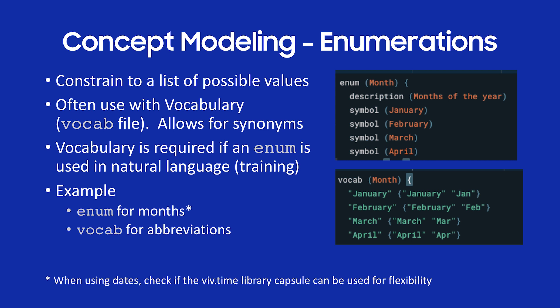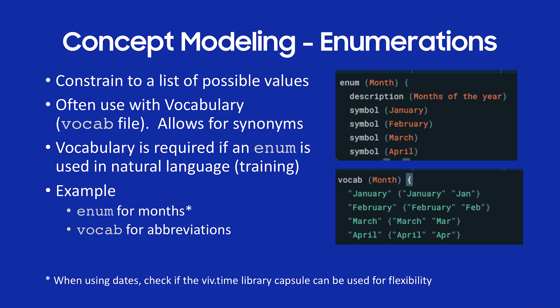Oftentimes when you're using enumerations you also use what we call vocabulary. Vocabulary is how you set up synonyms. So in that code snippet you can see I've set up synonyms: January/Jan, February/Feb, March/March, etc. What I'm really doing is setting up the ability for the user to say a synonym. So if I said 'Jan,' Bixby would interpret that as January. If I said 'Feb,' Bixby would interpret that as February. One note: if you're using your enum in natural language, it's absolutely required that you create vocabulary. You can set it up one-for-one to enable training.